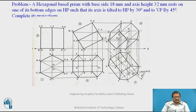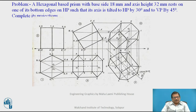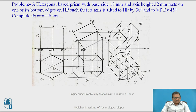If you read the first line — a hexagonal base prism is resting on HP — it is clear that the top view will be observed as a hexagon, whereas the front view will be observed as a rectangle. Another thing that is clear is that the prism is resting on a base edge, so the base edge will be towards your right side, because we have the practice of tilting the solid towards the right side or in the clockwise direction.